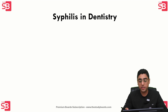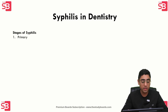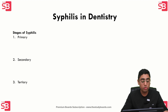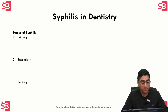We need to understand the different stages of syphilis. There are three main stages: primary, secondary, and tertiary. We will study each of these stages one by one.